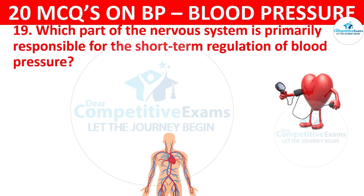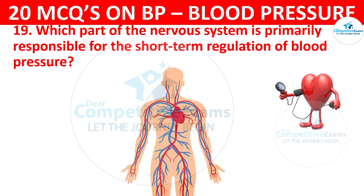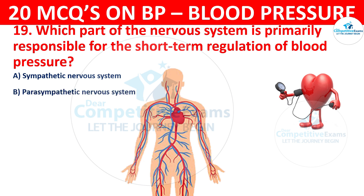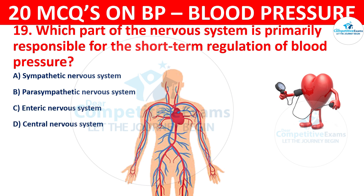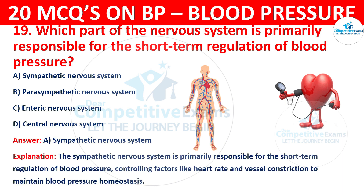Question 19. Which part of the nervous system is primarily responsible for the short-term regulation of blood pressure? Your options are: Sympathetic nervous system, Parasympathetic nervous system, Enteric nervous system, or Central nervous system? The correct answer is A, Sympathetic nervous system. The sympathetic nervous system is primarily responsible for the short-term regulation of blood pressure, controlling factors like heart rate and vasoconstriction to maintain blood pressure homeostasis.